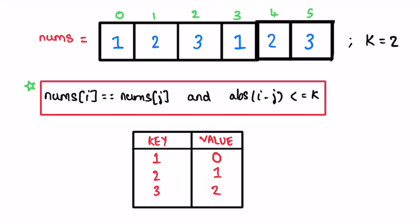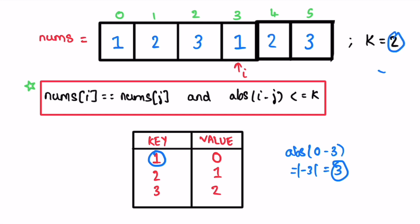Next iteration: i is pointing at 1. We check if it is present inside the map — yes, 1 is present. So we get its value. The stored value is 0 and the current index is 3, giving an absolute difference of 3. We check if 3 is less than or equal to 2 — no, it is not. So we have to replace its current value with the last index. Now 1's new index is 3; its previous index was 0.